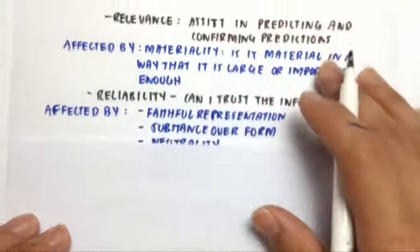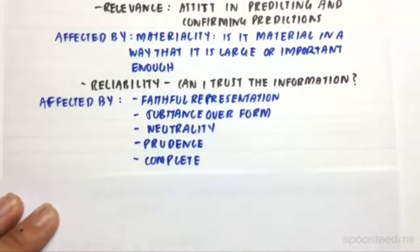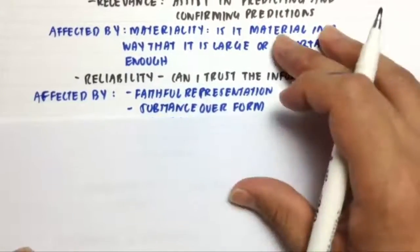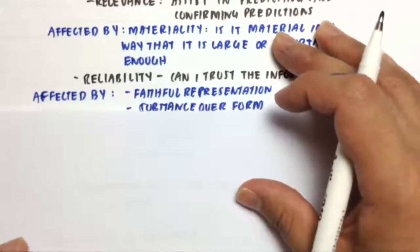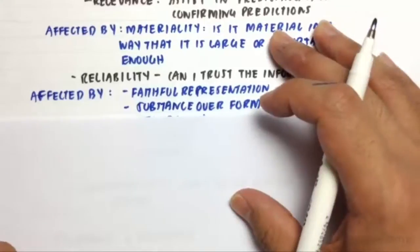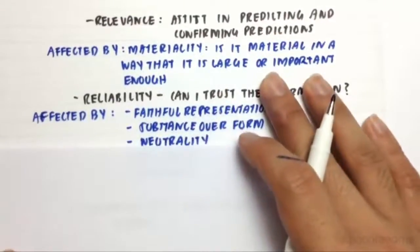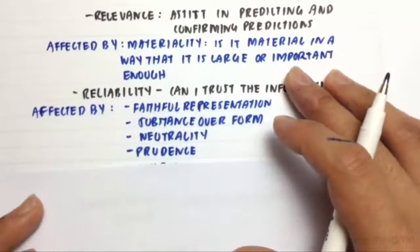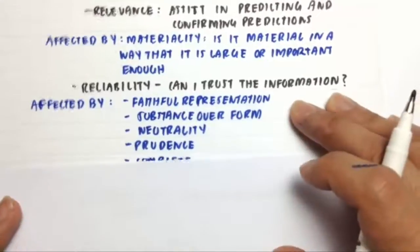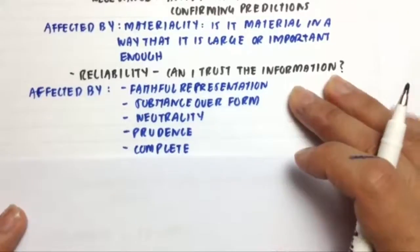And then we have reliability. So can I trust the information? That's affected by faithful representation. So what's on the balance sheet? Is that true and fair? Then we have substance over form. So this means it must show the economic reality of what's going on. Then we have neutrality. So it must not be biased at all. We have prudence. So it must not overstate our assets or revenues and must not understate our liabilities and our expenses. And lastly, it needs to be complete so that all information is already there.